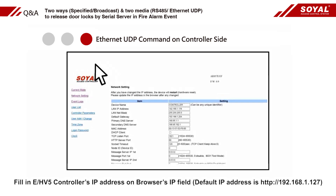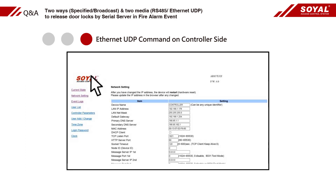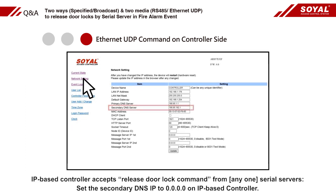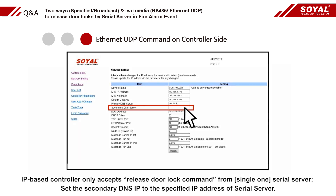Fill in the eHV5 controller's IP address in the browser's IP field. The IP-based controller expects a release door lock command from any one serial server. Set the secondary DNS IP to 0 on the IP-based controller. To have it only accept commands from a single serial server, set the secondary DNS IP to the specified IP address of the serial server.